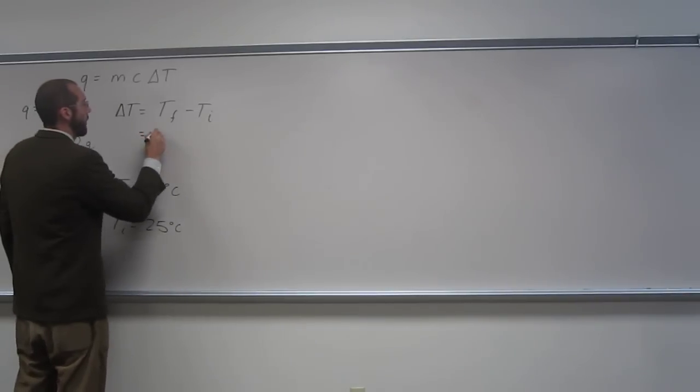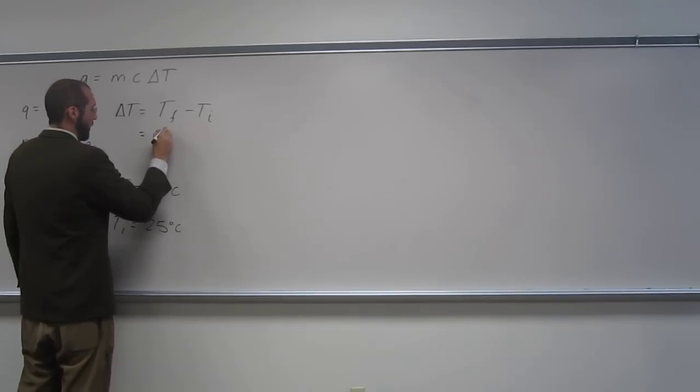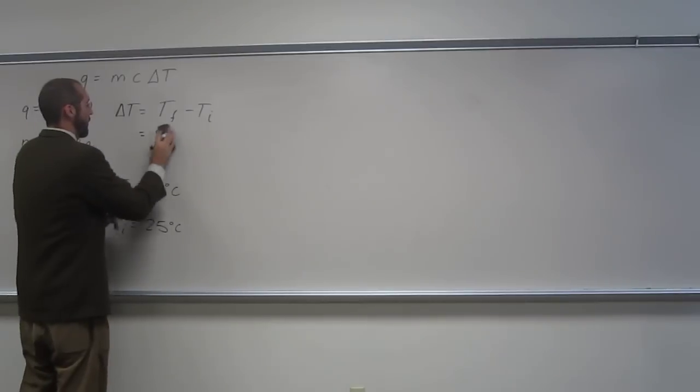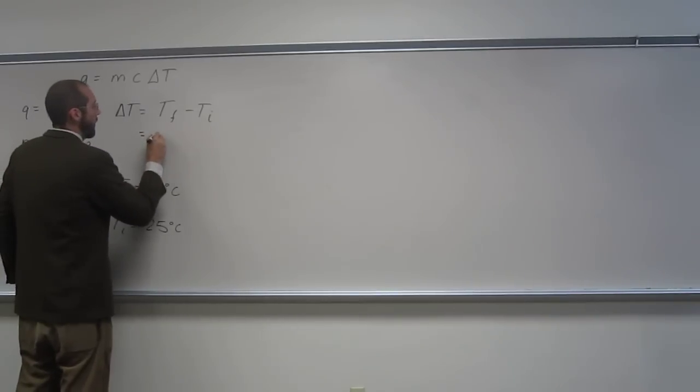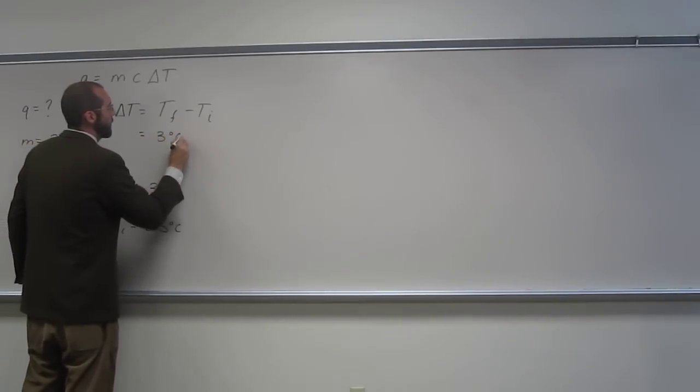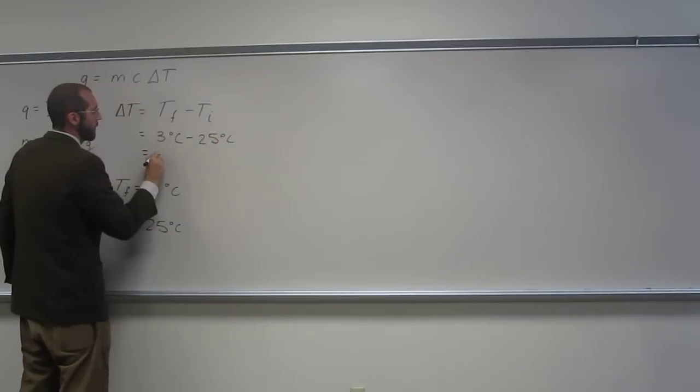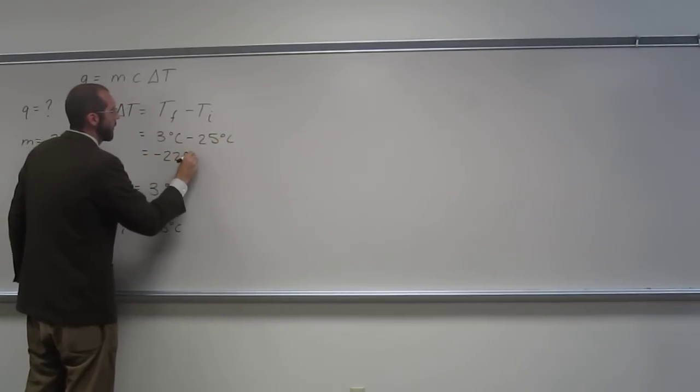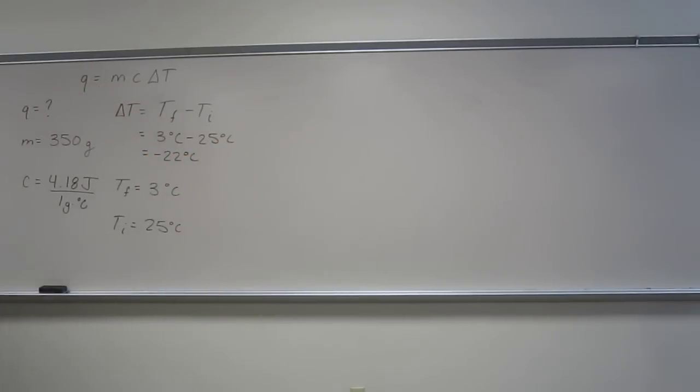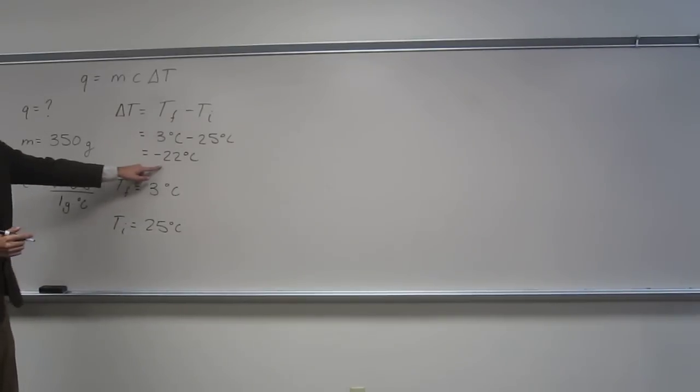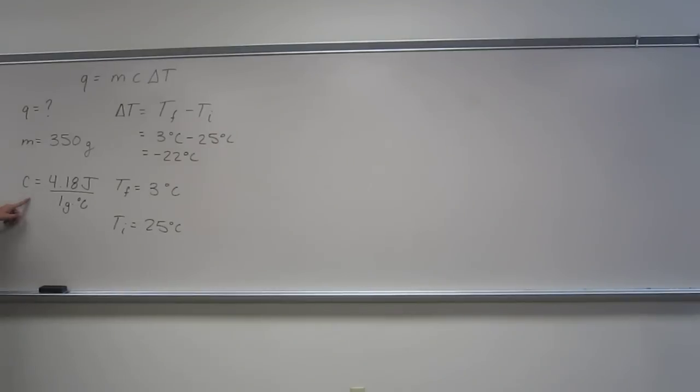So here we're going to say, 3 degrees C minus 25 degrees C. That equals negative 22 degrees C. So now we have delta T, we have C, and we have M. And we're looking for Q, so all we do is plug and chug.